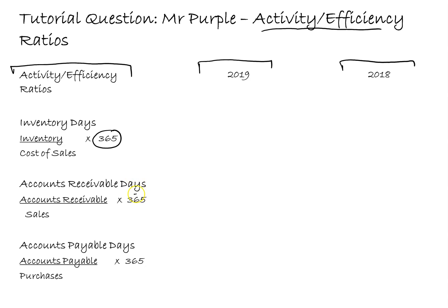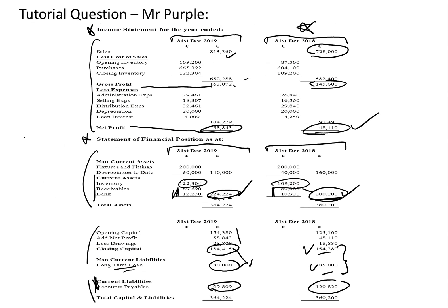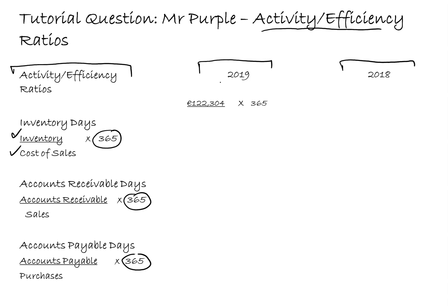All three efficiency ratios are expressed as days. For inventory days we use the closing inventory - some textbooks use average inventory but we're using closing inventory here. The closing inventory is 122,304 and cost of sales is 652,288. So 122,304 divided by 652,288 multiplied by 365 gives 68.4 days, meaning there's approximately 68.4 days worth of inventory sitting on the shelves.